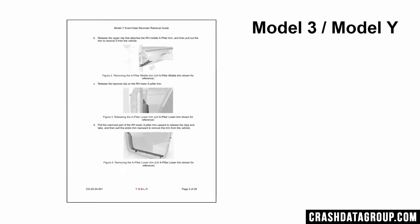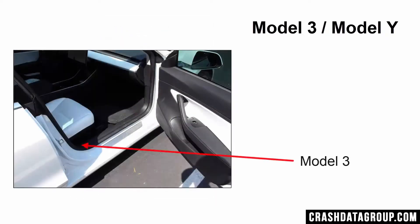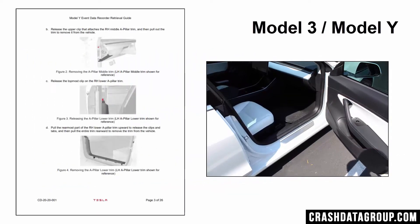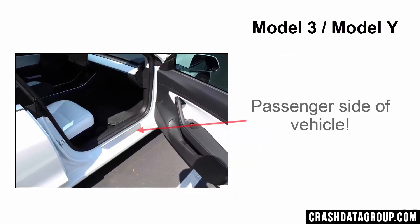The Tesla download instruction guides for the Model 3 and Model Y contain illustrations showing the location of the in-vehicle data connector. The in-vehicle data connector in a Model 3 is located beneath the door sill trim panel near the B pillar on the passenger side of the vehicle. The in-vehicle data connector for the Model Y is located behind a trim panel on the passenger side A pillar. The illustrations are of the driver's side of the vehicle, so make sure you're working on the passenger side for a Model 3 or Model Y.